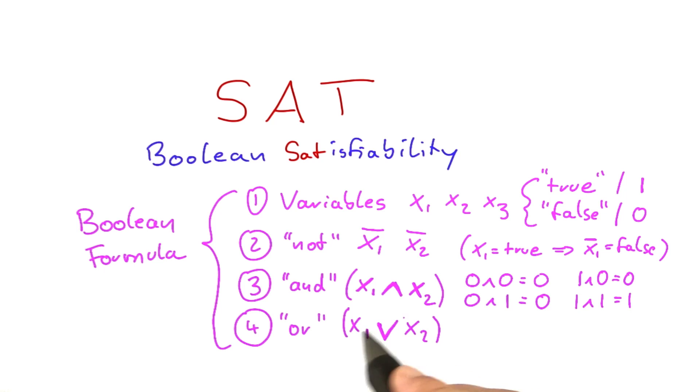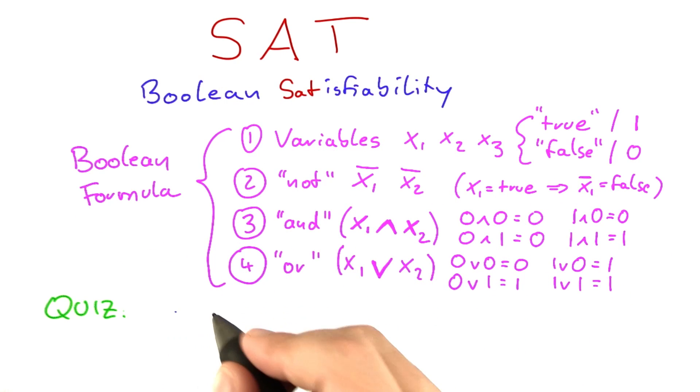So 0 or 0, that will still be 0. But 0 or 1 will be 1, 1 or 0 will be 1, and 1 or 1 is also going to evaluate to 1. Let's practice this in a little quiz.